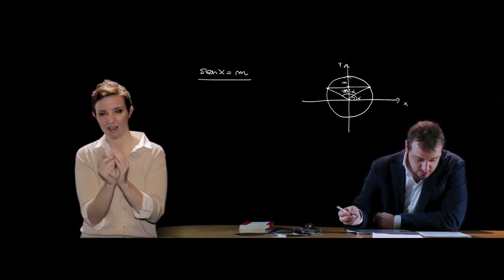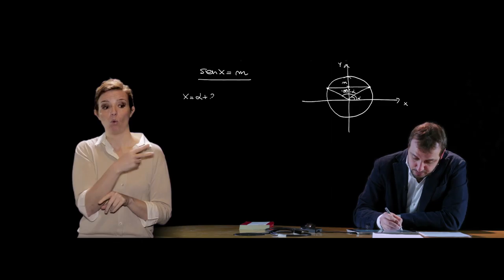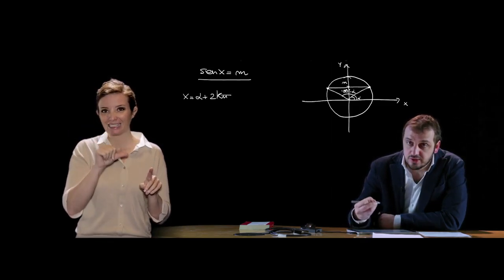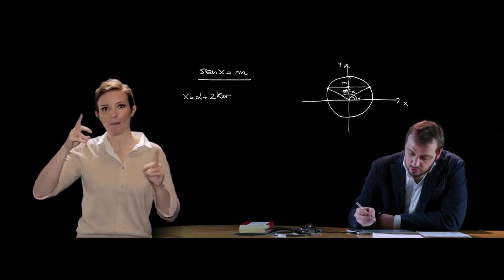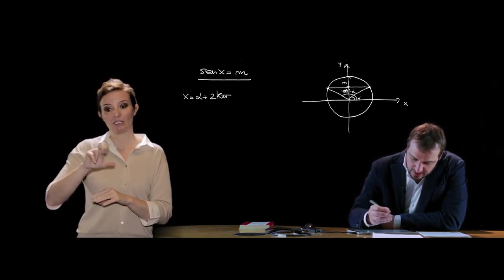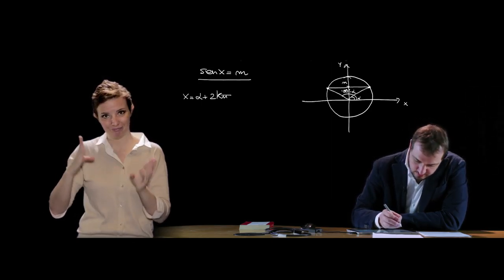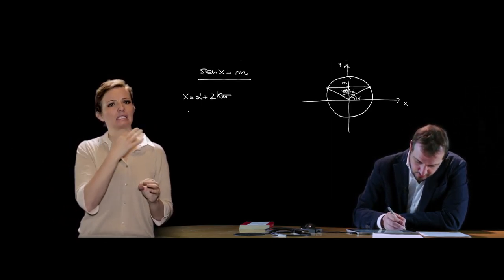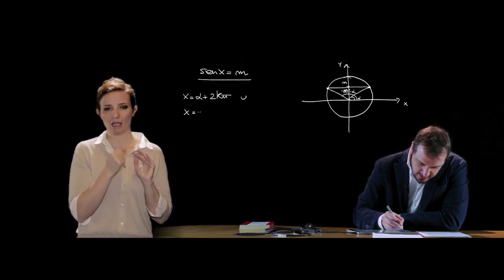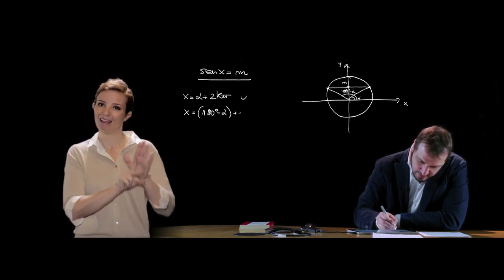Le soluzioni saranno x = α + 2kπ — ricordiamoci che la funzione sinusoide è periodica con periodo 2π, quindi si ripete ogni 360° — unita a x = 180° − α + 2kπ, dove k è un numero intero, sia negativo che positivo che nullo.